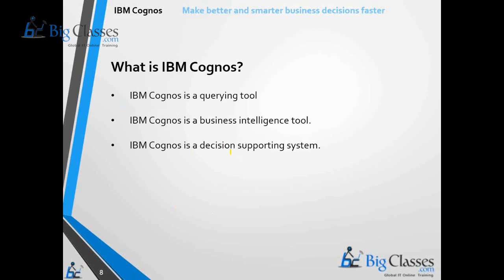What is IBM Cognos? IBM Cognos is the same tool that we call by different names — sometimes a querying tool, sometimes a business intelligence tool, and sometimes a decision support system. These many different names — why? Let us see about each one.